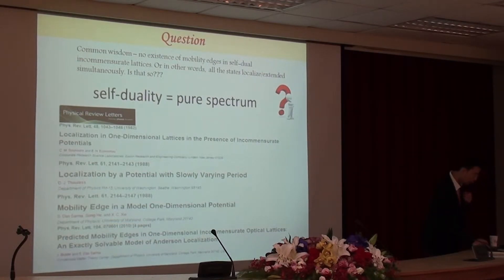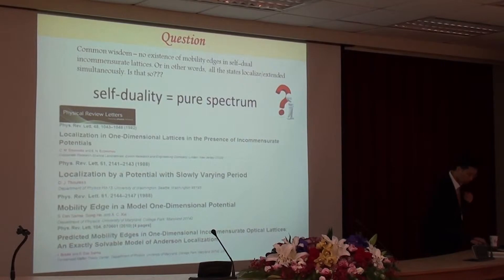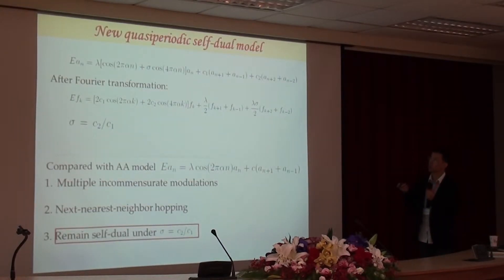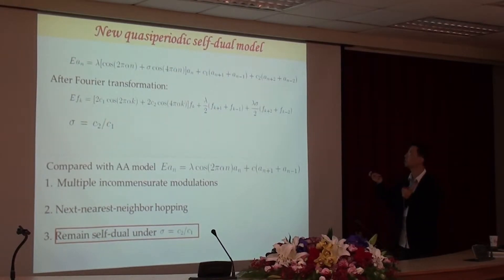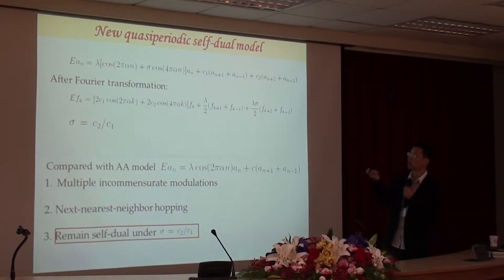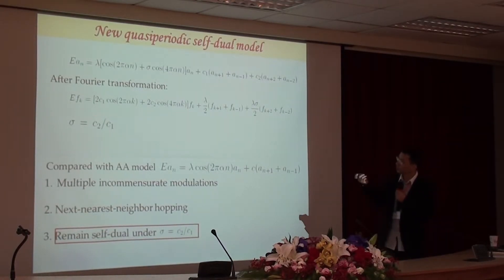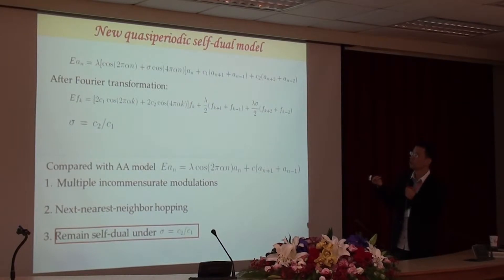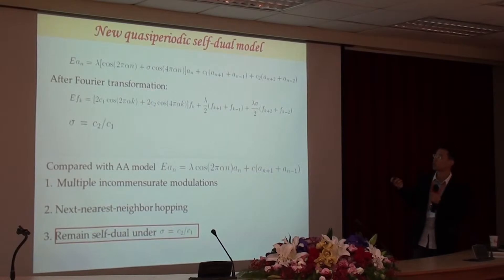We want to find some self-dual model and check if there is no mobility edge. To answer this question, we construct a new model. We introduce a next-nearest-neighbor hopping term C2. To keep this model self-dual, we add another on-site modulation term with double frequency compared to the original term. By making a Fourier transformation and comparing the dual form with the original, we find that under the condition sigma equal to C2 over C1, this model is self-dual.